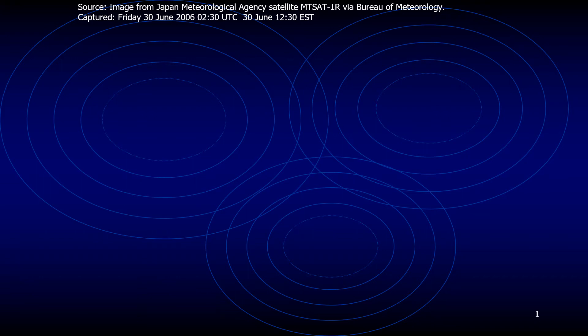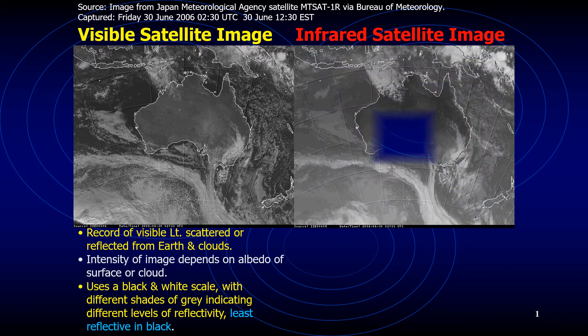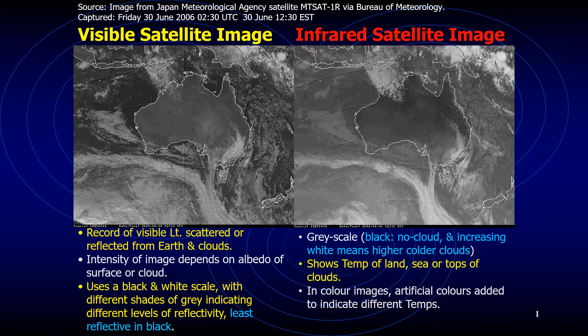I've previously made a video on the three types of satellite images available to mariners, where I discussed the visible satellite image, the infrared satellite image, and the water vapor images. I wanted to make one more video to show you more about what the infrared satellite image is, what they look like, and how they indicate weather patterns. You've probably seen a mean sea level analysis chart, but you may not be familiar with infrared satellite images.